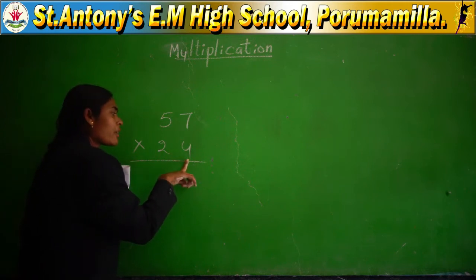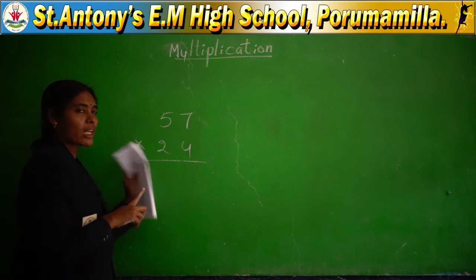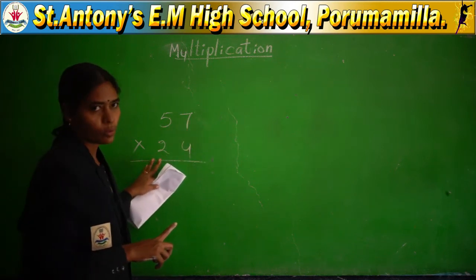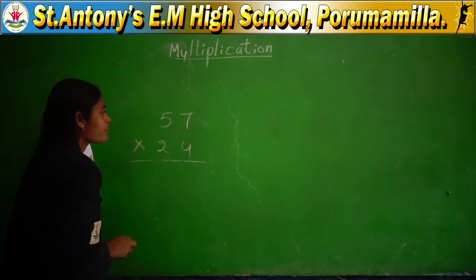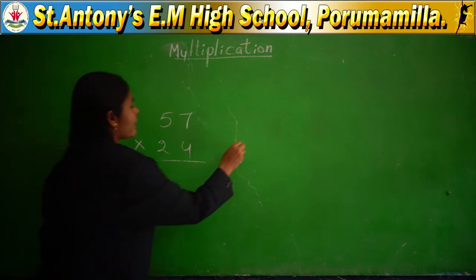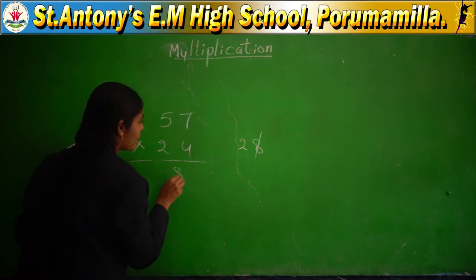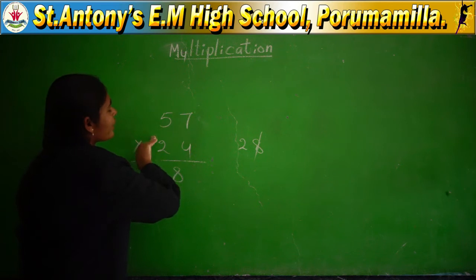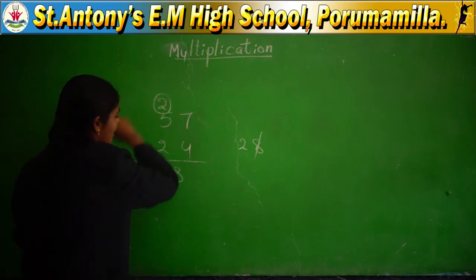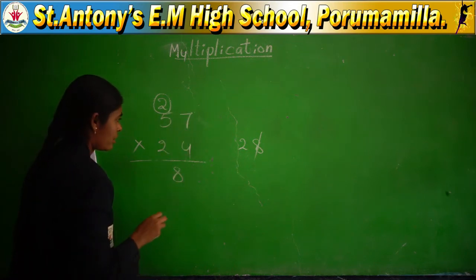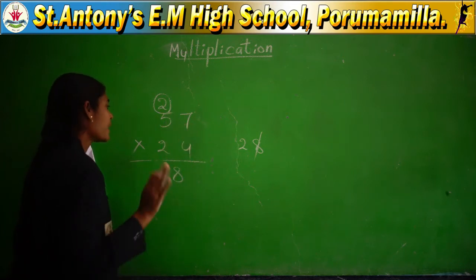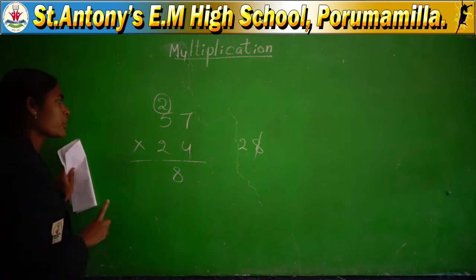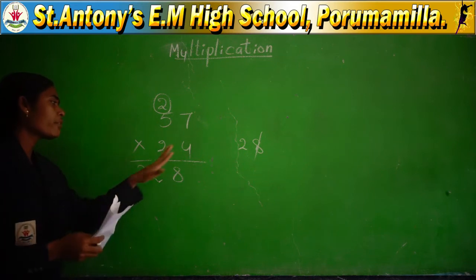First, 4 sevens are 28. Write 8 in the answer line, keep 2 as the carry. Next, 4 fives are 20, plus carry 2 is 22. Write 22 directly because you have totally completed the multiplicand with the multiplier digit 4. You completed with the 1's place digit, so put an into marker at the 1's place and strike out the carry, because now you move to the next multiplier digit.